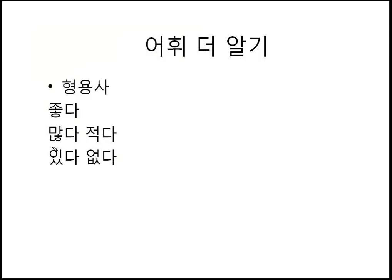Let's see more vocabulary — these are adjectives: 좋다, 많다, 적다, 있다, 없다. The pronunciation of 좋다 — the ㅎ ending consonant meets the following ㄷ, and that ㄷ becomes aspirated, so the sound becomes 좋다. Similarly, 많다 — the ㄴ is followed by ㅎ, making it aspirated as well.